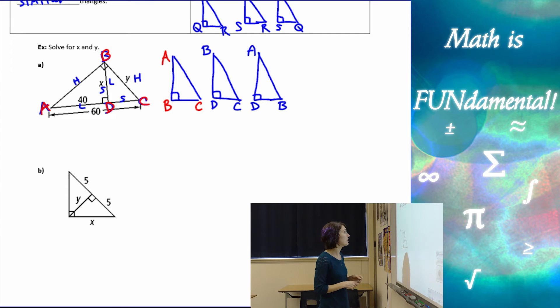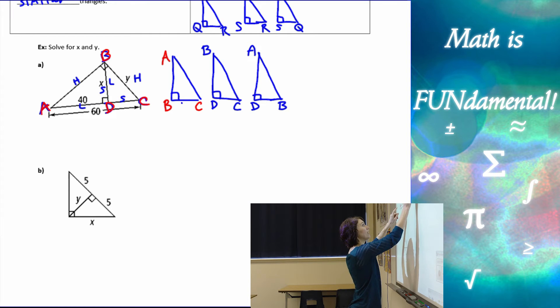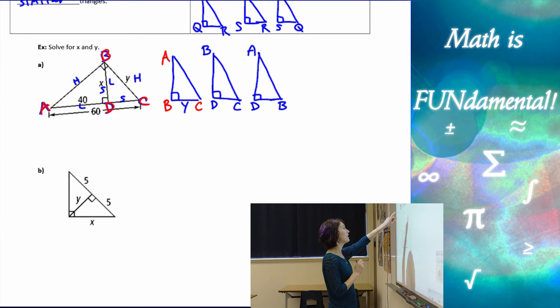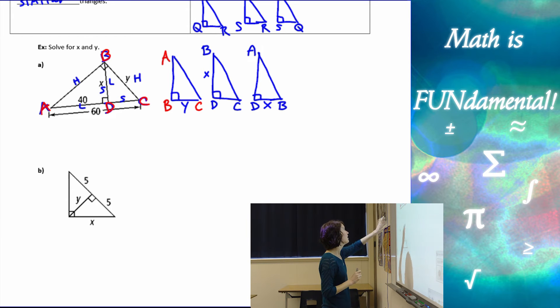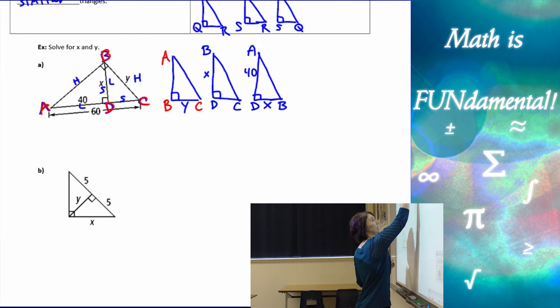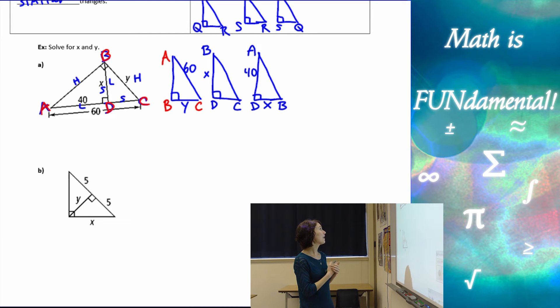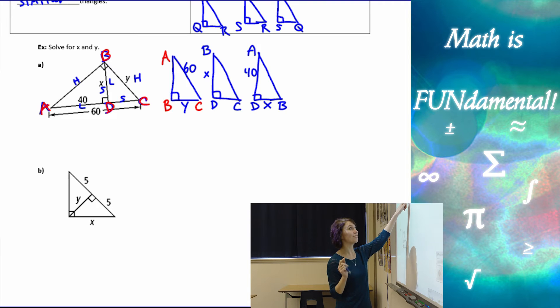Now let's fill in the pieces of information that we have. So I know that B, C is Y, and then I know that B, D is X. So that's going to go here and here. A, D is 40. That's going to go there. And A, C is 60. I know if that's 60 and that's 40, then D, C has to be 20 using my subtraction.